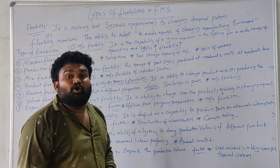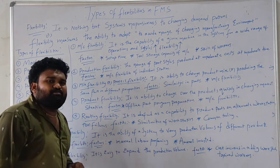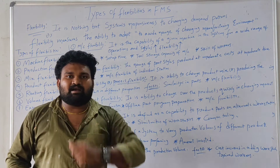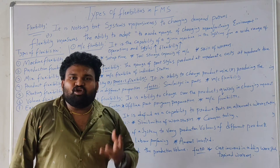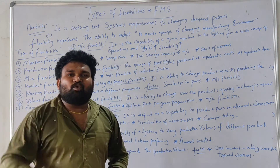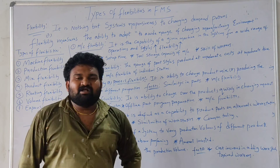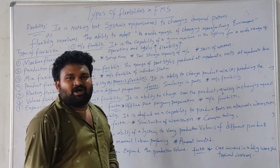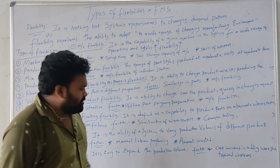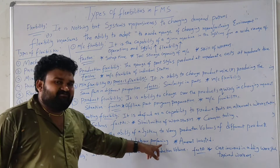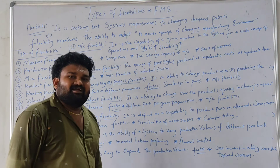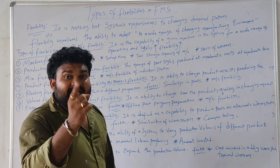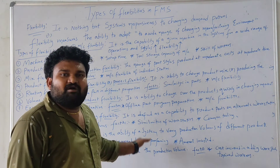Routing flexibility allows alternate routes when machines are busy. Coming to volume flexibility: normally we produce a set number of parts. What we need to consider is how to adjust the production volume. Tools, workers, and business resources must be scaled. Volume flexibility is the ability of the system to operate profitably at different production volumes, requiring appropriate investment.